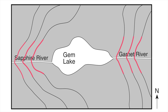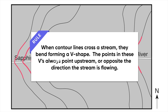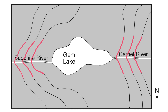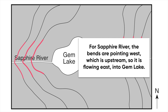This brings us to a new rule: when contour lines cross a stream, they bend and form a V shape. The points of the Vs are always going to point upstream, or opposite the direction that the stream is flowing. Let's take a look at Sapphire River on the left. If I look at the bends, you'll see the Vs are pointing to the left or to the west. So I know that is upstream, which means the river is flowing opposite that — in this case, the river is flowing into Gem Lake.